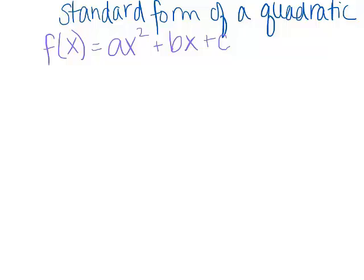These notes are about standard form of a quadratic function. You've probably seen standard form before. It is a function of the form f of x equals ax squared plus bx plus c. You may have converted vertex form to standard form by multiplying things out, but it is considered standard form.